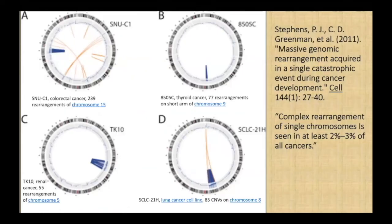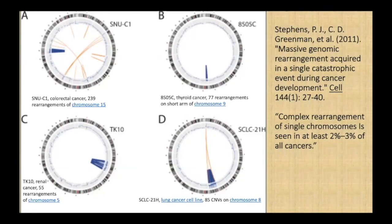Cytogeneticists have known for over a century that genome rearrangements are common in cancer cells. DNA sequencing has focused attention more sharply on the basic processes of genome change in cancer. In 2011, Stevens et al. published early results of whole cancer genome sequencing. Many cancers consisted of clones of cells with multiple shared chromosome modifications, suggesting they occurred, as the title of the paper says, in a single catastrophic event.